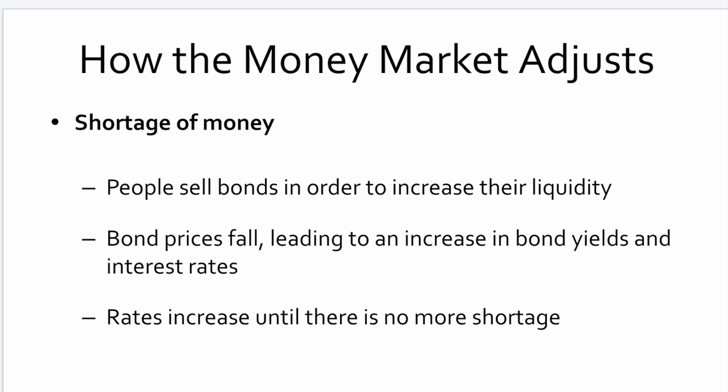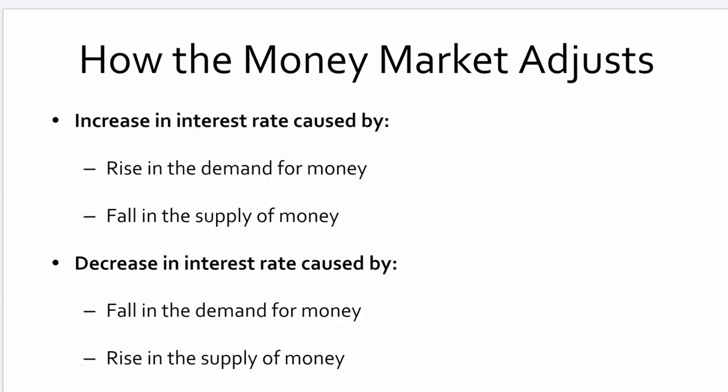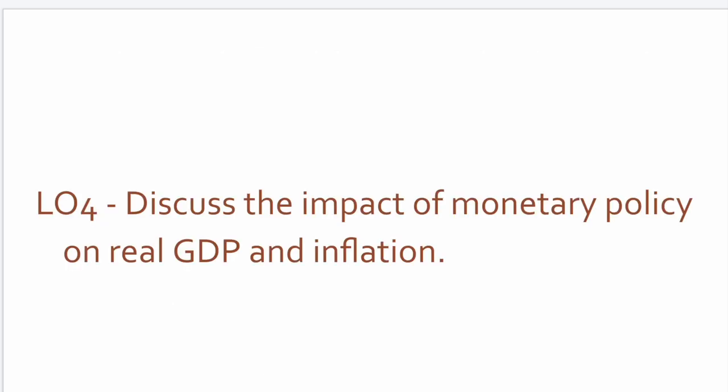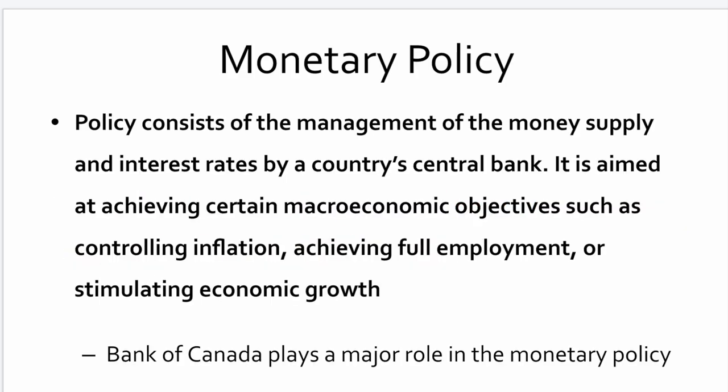An increase in the interest rate is caused by a rise in demand for money or a fall in the supply of money. A decrease in the interest rate is caused by a fall in demand for money or a rise in the supply of money. Monetary policy really consists of the management of the money supply and interest rates by the country's central bank — in this case, the Bank of Canada.